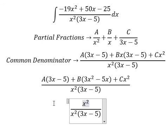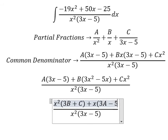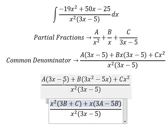For x squared we have 3B and C. For x we have 3 multiplied by capital A, negative 5 multiplied by capital B, so we have 3A minus 5B. For the number we have negative 5 multiplied by capital A.